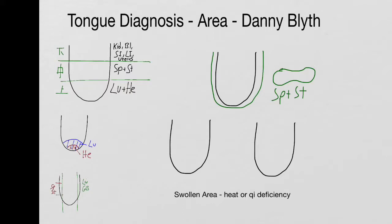And if the sides are swollen like so, this tends to be the liver and gallbladder. And if just the centre of the sides are swollen, it tends to be the spleen and stomach.